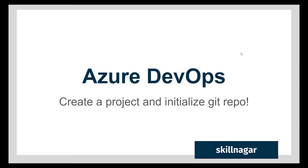In this video we are going to learn how to create a new project. We've learned that before, but now we are also going to initialize a git repo. This video will not cover what git is or how it works — I expect you already know that. We will be creating a new project and initializing a git repo directly from the Azure DevOps portal.